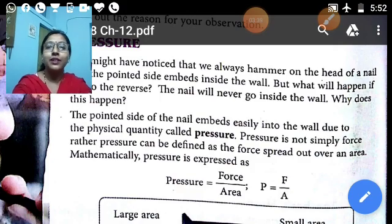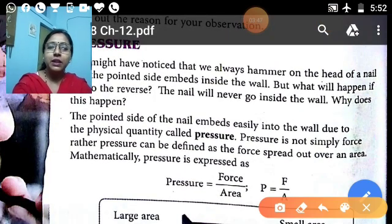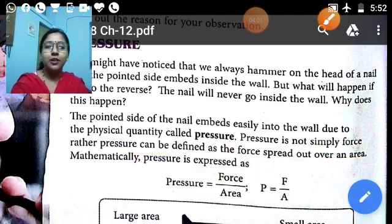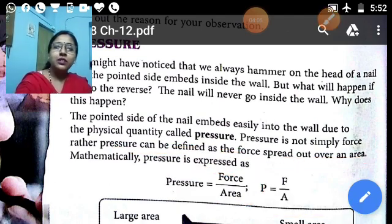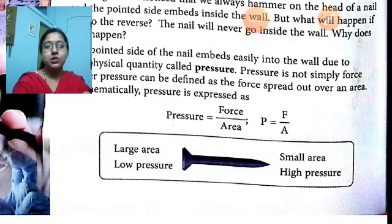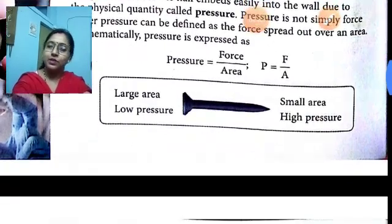Pressure is not simply force. Rather, pressure can be defined as the force spread over an area. Mathematically, pressure is expressed as force divided by area. Pressure is directly proportional to force, and inversely proportional to area. So large area means low pressure, and small area means high pressure. This means pressure is related to both area and force.